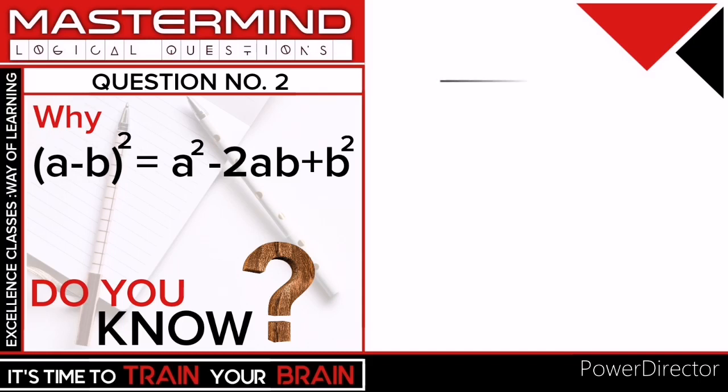So let's start with a line, and the length of this line is a. Now we take a point on it, and this short segment that you see here, the length of this segment is b. So obviously, the length of this longer segment will be a minus b.